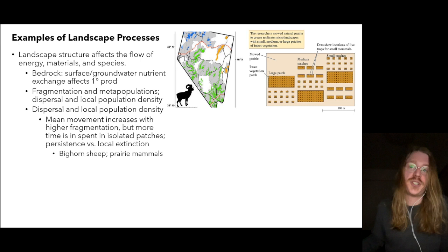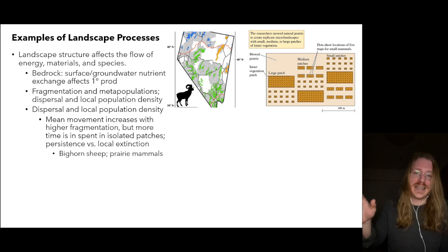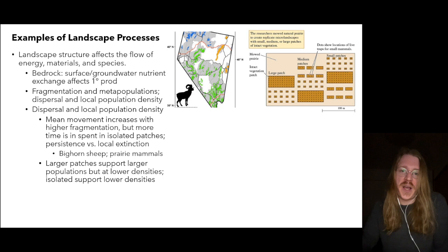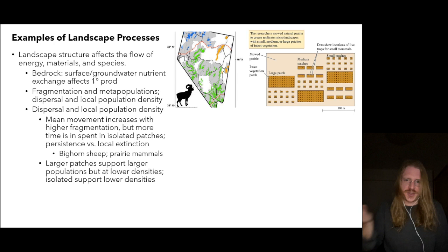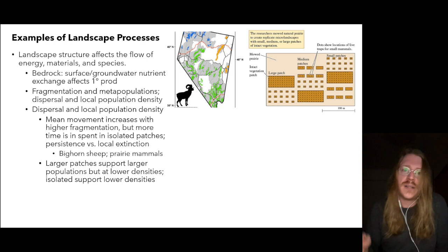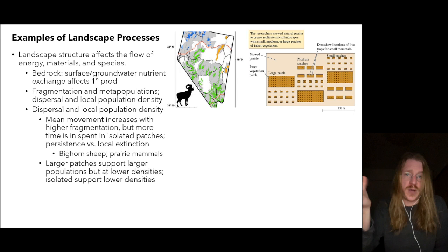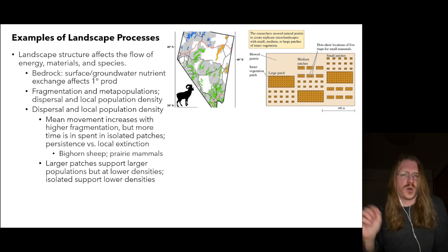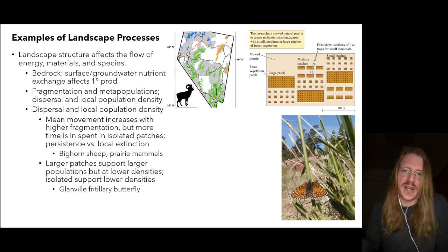The mean movement of organisms is what we define as their home range. With larger patch sizes, these patches can support larger populations — that's obvious, there are more resources — but the actual population density decreases. Individuals are more spread out than in a smaller patch. Isolated patches also support lower population densities because the degree of isolation reduces immigration rates.